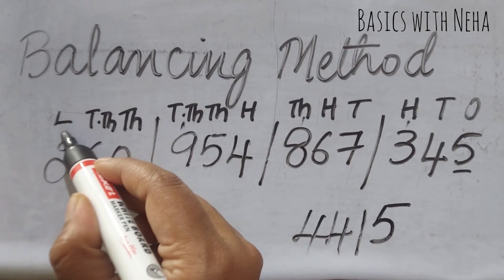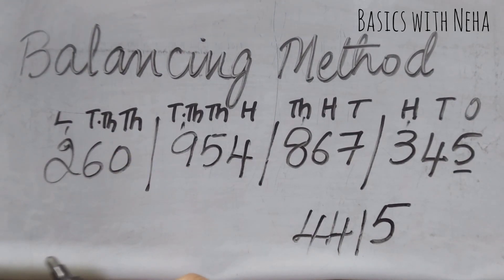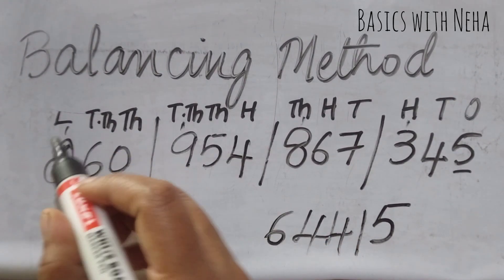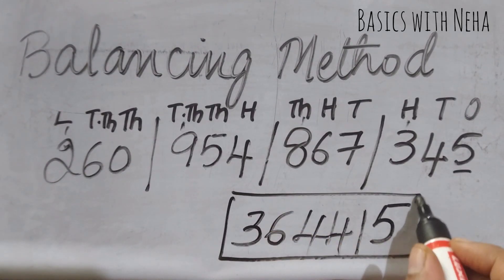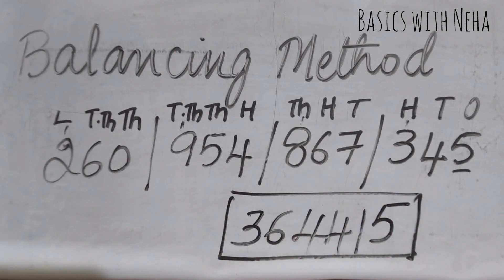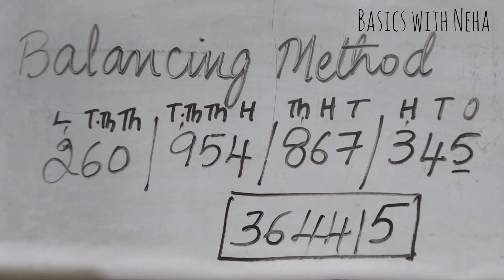So it will be one on the lakhs place and six. Two plus one is three, and this will be my final answer to this sum. I hope this video was helpful.